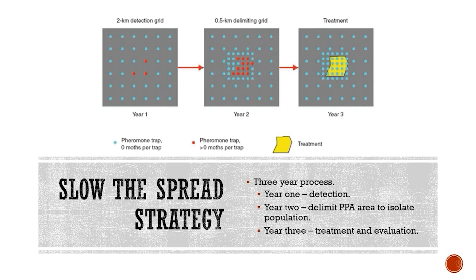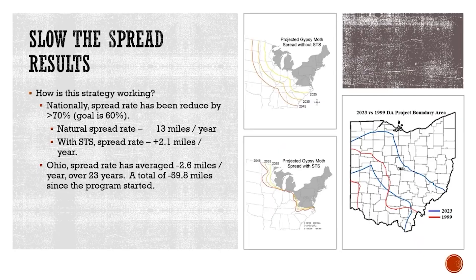There's a three-year process to how we address populations. In our statewide trapping survey, we do a general grid at a certain spacing. When we find positive catches — when we find spongy moths in the traps — the following year we'll do what's called a delimit, where we do additional trapping around it to define the edges of that population. In the third year, we'll take that defined area and apply some sort of treatment to it, then evaluate it with a second delimit to see how effective that treatment was. Some of the results of this program: it's working very well. Nationwide, the spread rate of spongy moth has been reduced by 70%, and the goal of the project was to reduce by 60%, so we're exceeding that goal.